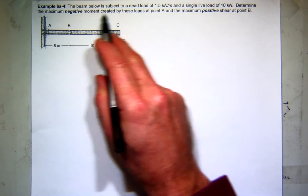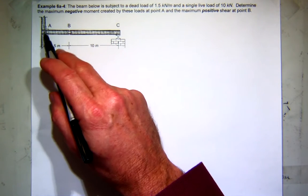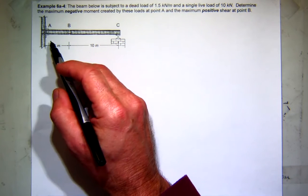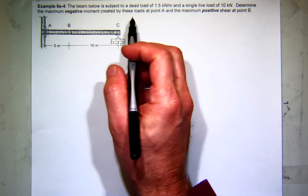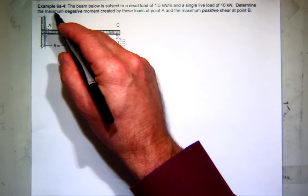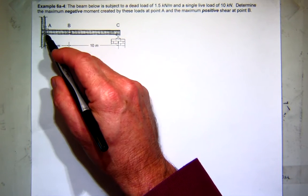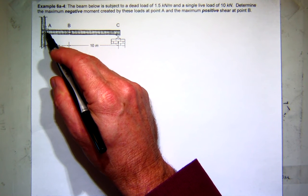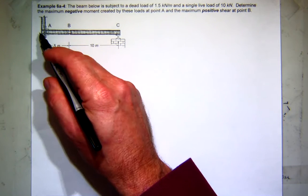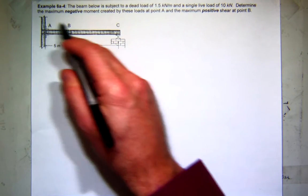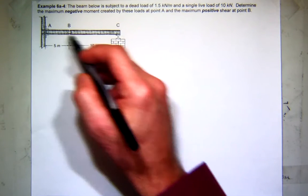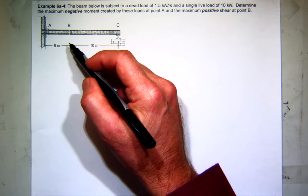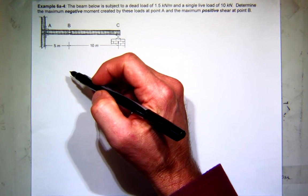I want to find the maximum negative moment that can be created at A and the positive shear at B. Let's do the moment at A first. The moment at A is over here at this fixed connection. Can I do one free body diagram to find the moment at A as the unit load moves around? No, I've got three unknowns here and one there, so I'm going to have to break this thing up right here about the hinge.